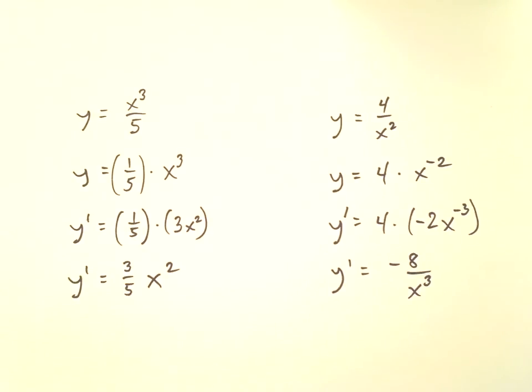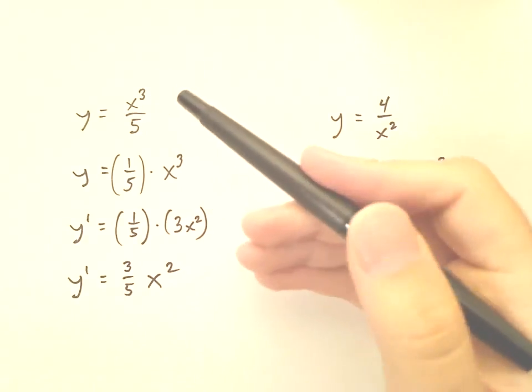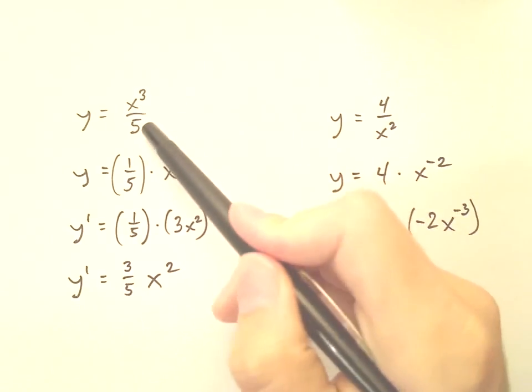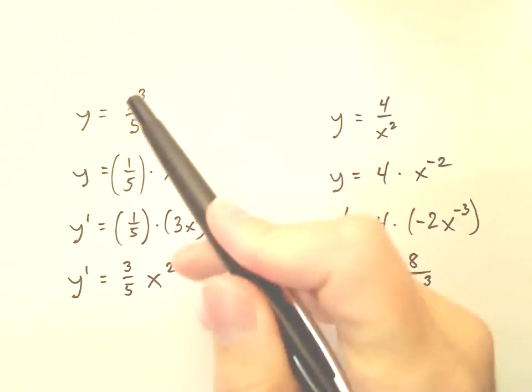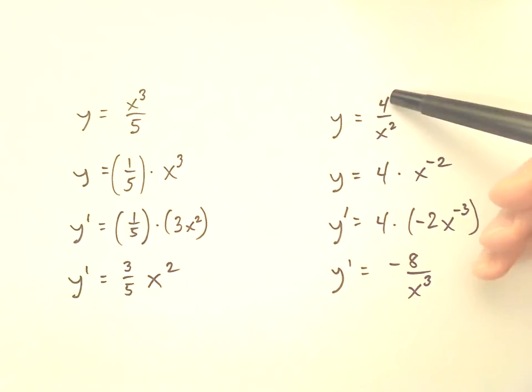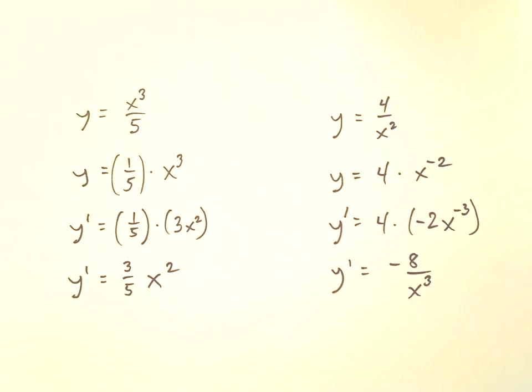So what is it about these two examples that makes it so easy to avoid the quotient rule? Well, maybe you've noticed. In both cases we have a quotient, but in this case the denominator is just a constant. Over here, the numerator is just a constant. When you have either this or this, you can always bypass the quotient rule altogether and either do things this way or do things this way. The only time you really should use the quotient rule is if you have a function of the variable in the numerator and the denominator at the same time.